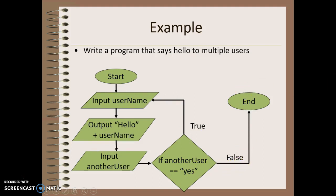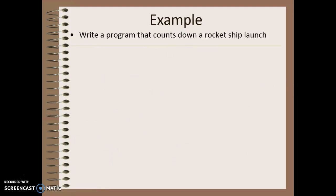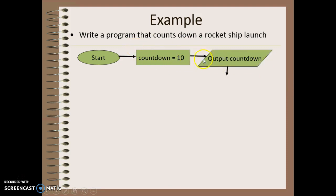Let's take a look at one more example. So in this case, we're going to do a countdown to a rocket ship launch. So we start, and we say, okay, our countdown value is going to start at 10, because we usually go 10, 9, 8, 7, 6, right?